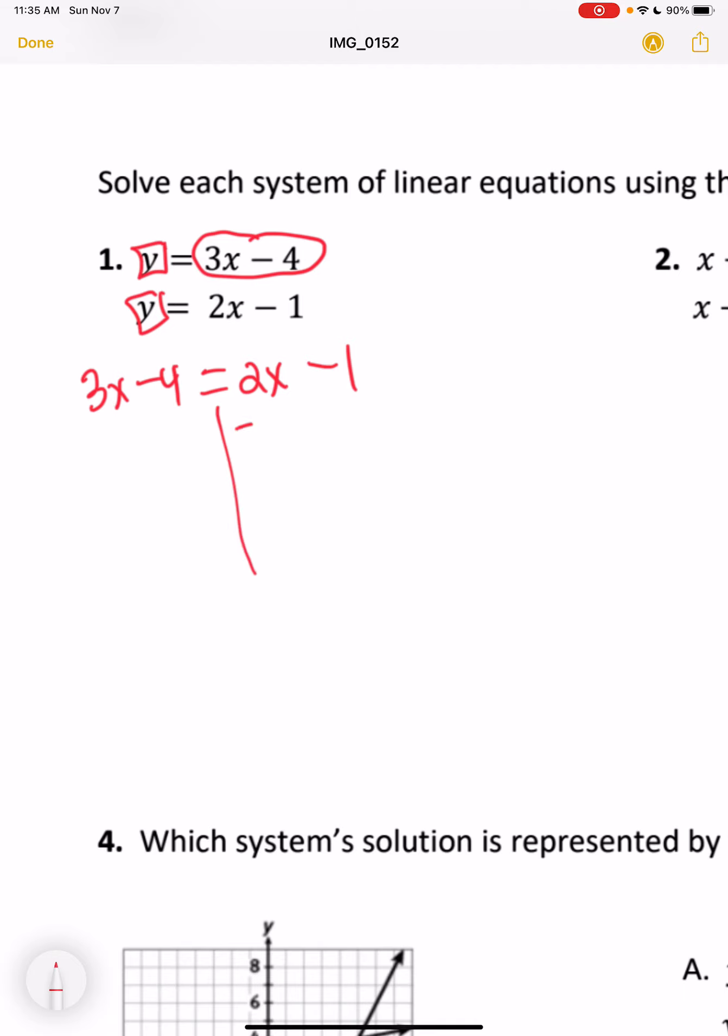Once we have this, we have an equation with variables on both sides. You move the smallest one and bring everything else down. Add 4 to both sides to get x is equal to 3.